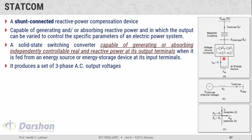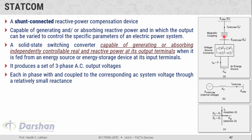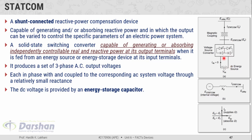The voltage source converter is essentially an inverter — it converts DC parameters into AC parameters. It produces a set of three-phase AC output voltages, each in phase with and coupled to the corresponding AC system voltage through a relatively small reactance. That reactance is offered by the magnetic coupling, i.e., the coupling transformer used to couple the STATCOM to the utility bus. The DC voltage is provided by an energy storage capacitor connected at the input of this voltage source converter.